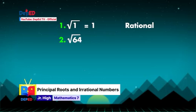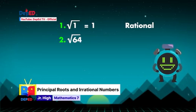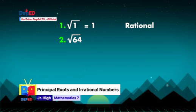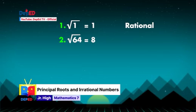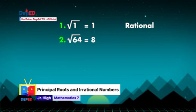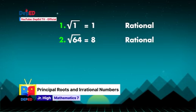Number 2: square root of 64. The correct answer is blue — since we have extracted a rational number, which is 8. Therefore, we can say that the principal root of square root of 64 is rational.